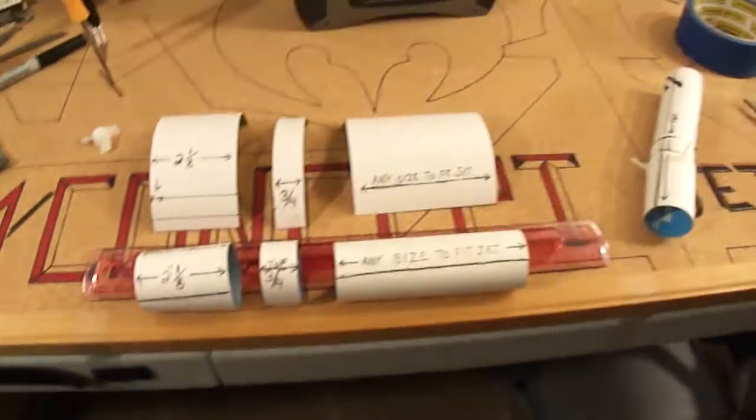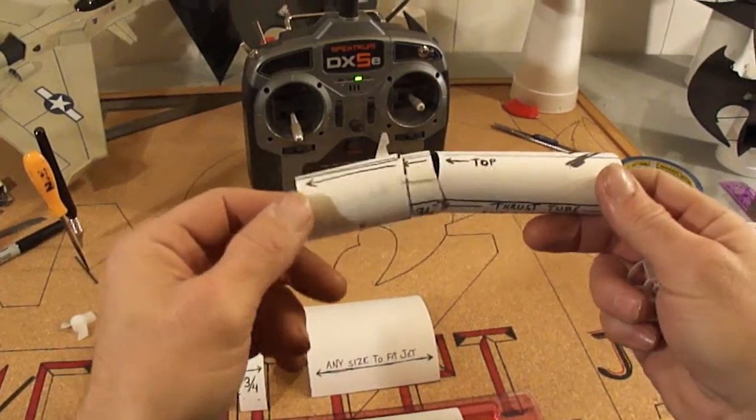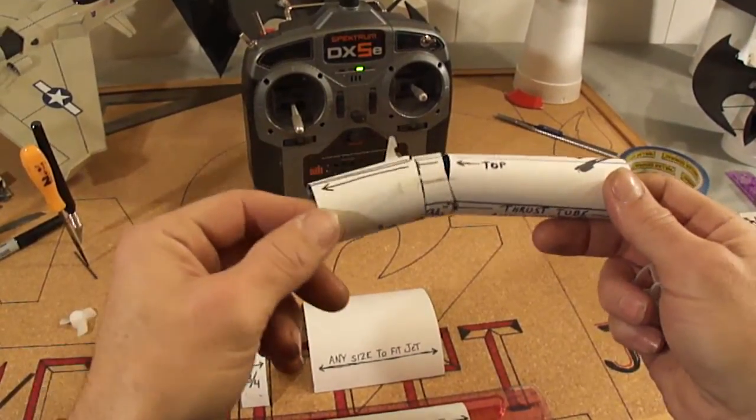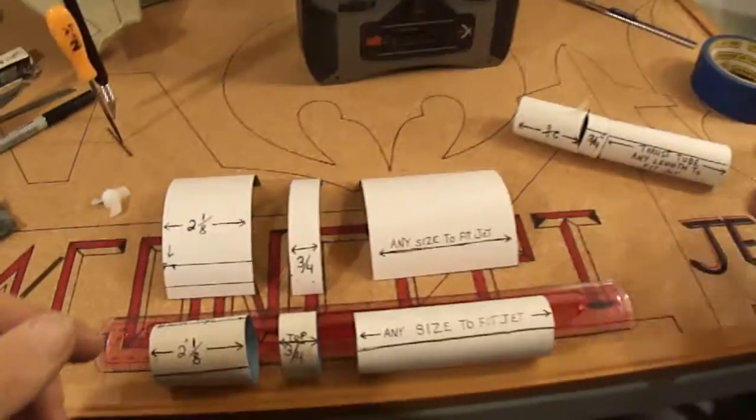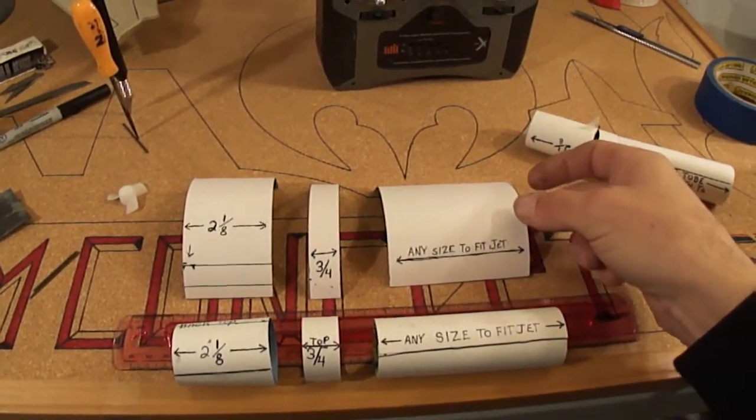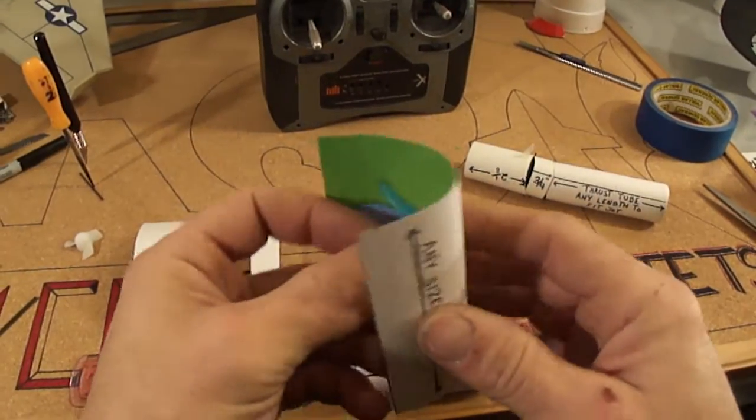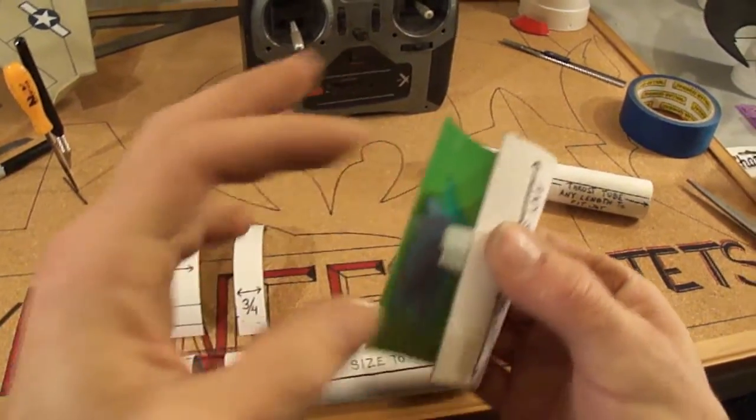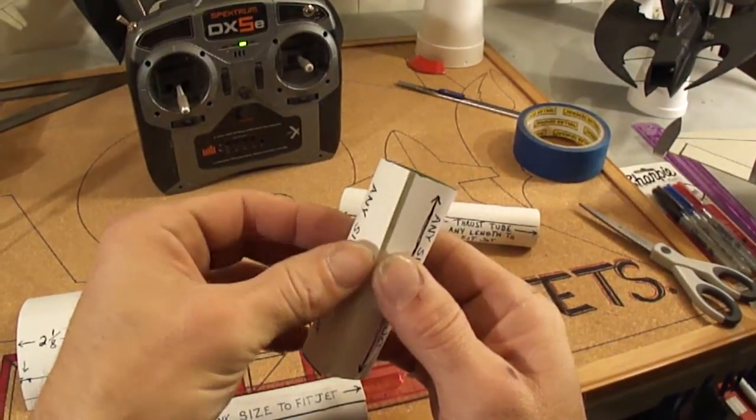So here we got our pieces all set up. Here's a nozzle I already built on the end of this thrust tube. I'm going to get your measurements for this. Your thrust tube itself will be different lengths of course for your different jets. I'm going to put the EDF unit in there for the fan shroud.